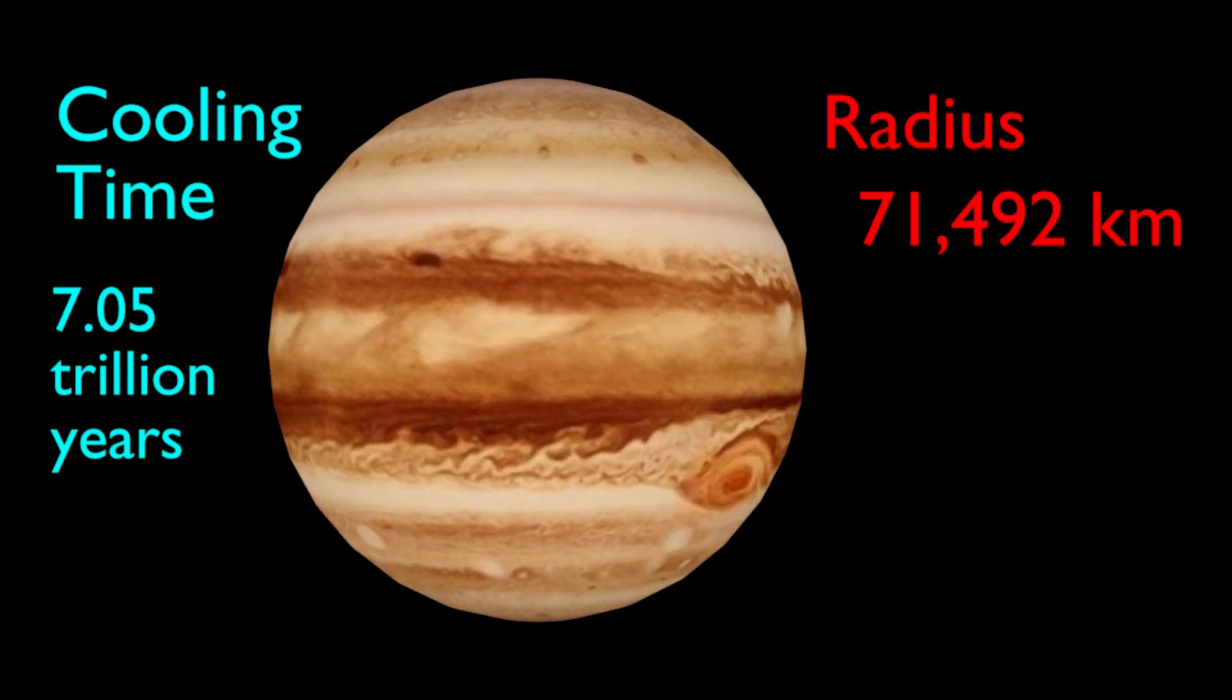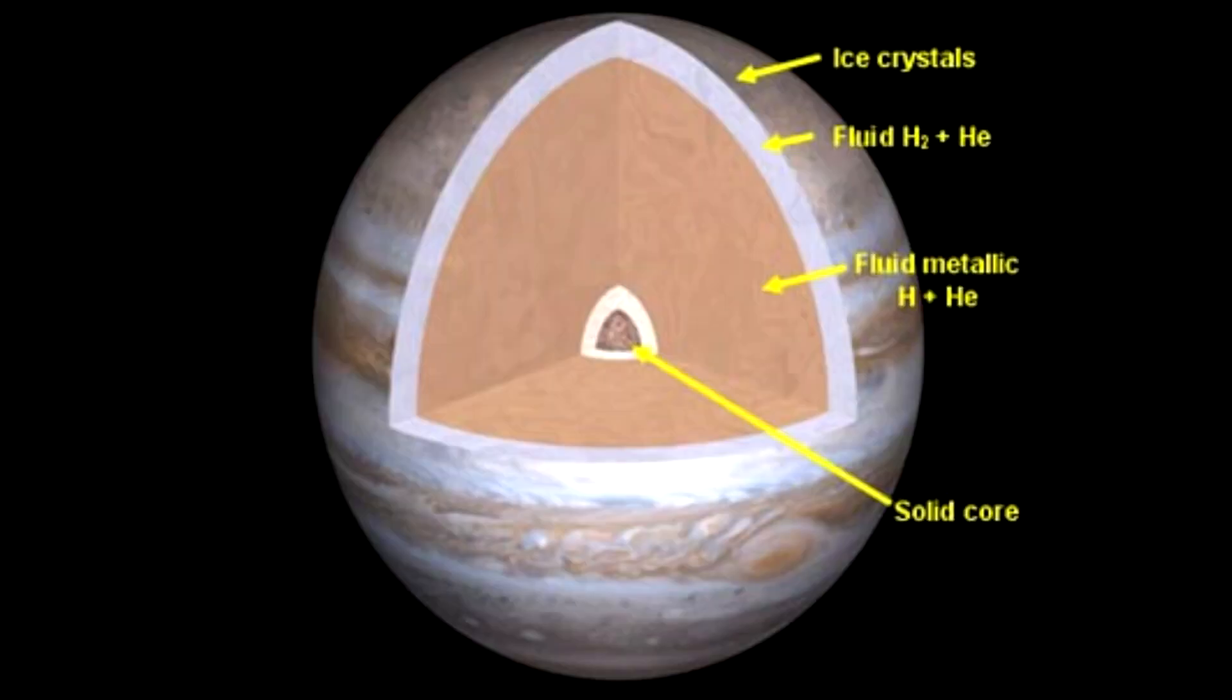Of course, Jupiter is not made of iron, and it cools by convection and conduction. But it really doesn't matter what numbers you plug into the formula, or whether you use a formula for convection or conduction, because for any object the size of Jupiter, you are always going to get a cooling time way larger than 4.6 billion years.